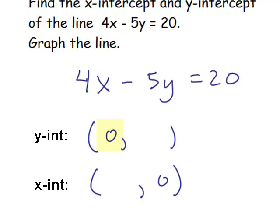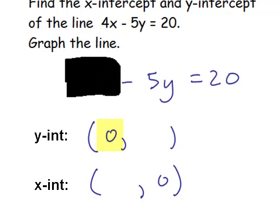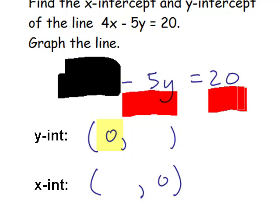Letting x equals 0 is like covering up one of the terms there. And now we just have negative 5y equals 20 and we can solve for that and get negative 4 for the y value.